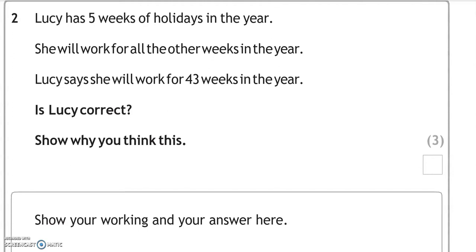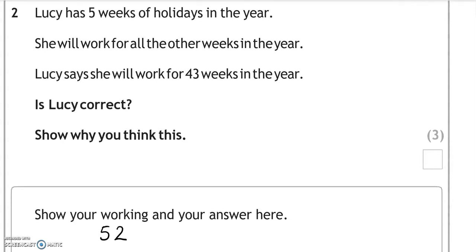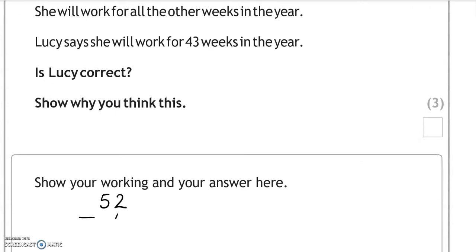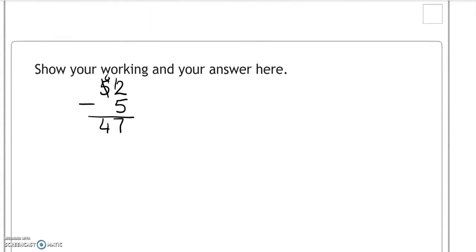Lucy has five weeks of holidays in the year. She will work for all the other weeks in the year. Lucy says she will work for 43 weeks in the year. Is Lucy correct? Show why you think this. So there are 52 weeks in the year. If you take away five, twelve take away five is going to give us seven, and then four take away zero is four. So 47 weeks. Is Lucy correct? No.